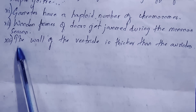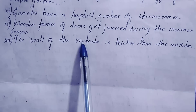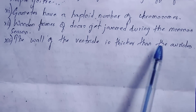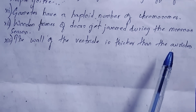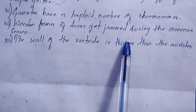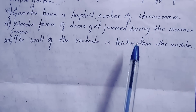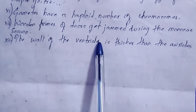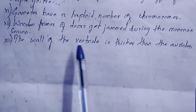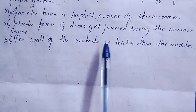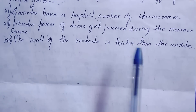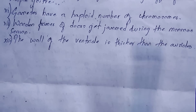Question 13: Why are the walls of the ventricles thicker than the auricles? The walls of the ventricles are thicker than the auricles because the ventricle has to pump blood out under very high pressure, against the force of gravity. So the wall of the ventricle is thicker than the auricles.